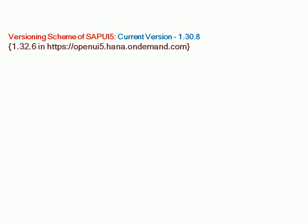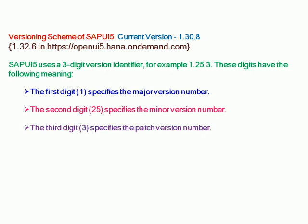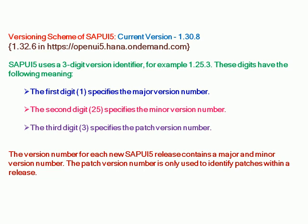Versioning scheme of SAPUI5: the current version is 1.30.8, whereas OpenUI5 is at 1.32.6. SAPUI5 uses a three-digit version identifier. For example, in version 1.25.3: the first digit (1) specifies the major version number, the second digit (25) specifies the minor version number, and the third digit (3) specifies the patch version number. The version number for each new release contains a major and minor version number; the patch version number is only used to identify patches within a release.